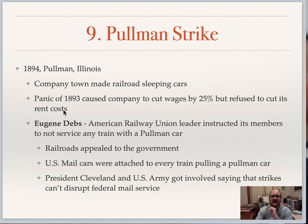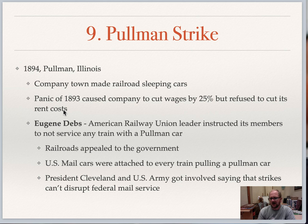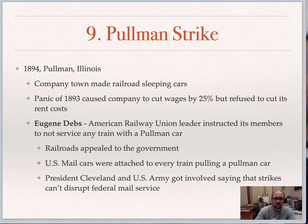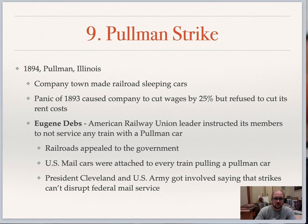The last significant strike of the 1800s was the Pullman Strike — another company town where they made the Pullman railroad car. The panic caused the company to cut wages but they wouldn't cut rent costs or food costs. Workers went on strike and got the help of the railway union, who promised not to service any train pulling a Pullman car. Since nearly every train also had mail cars on them, President Cleveland got the US Army involved, claiming the mail must go through. You must service any train with a mail car — otherwise that is a crime. So they came down on the side of the railroad company and got the strike stopped.